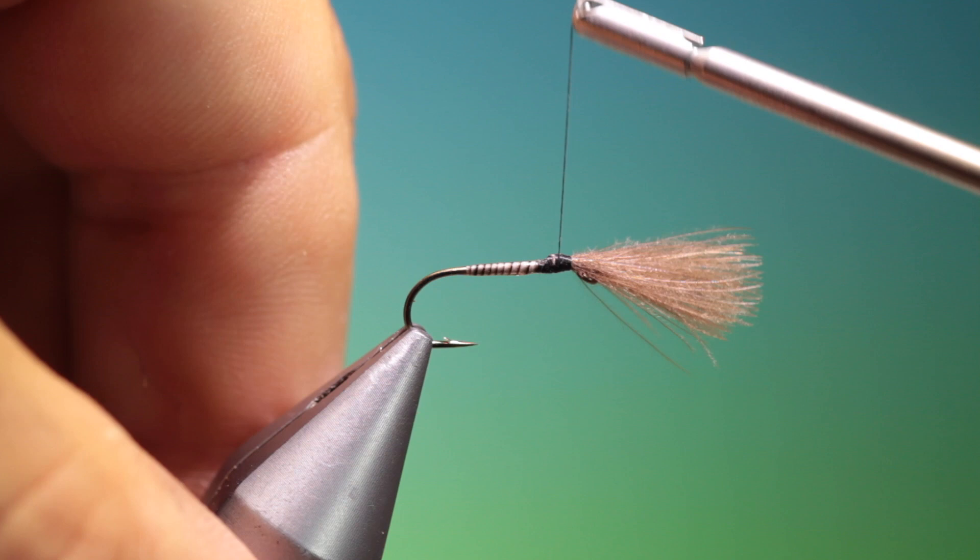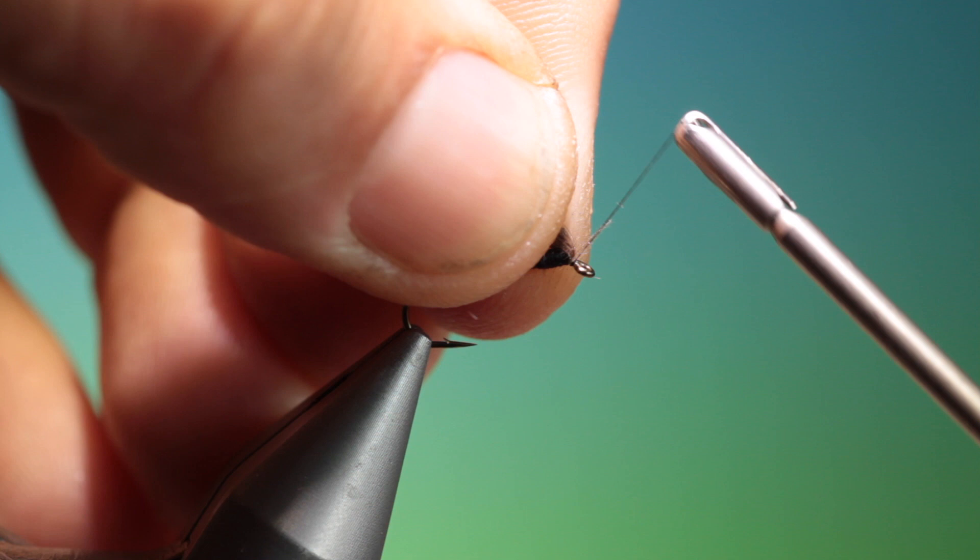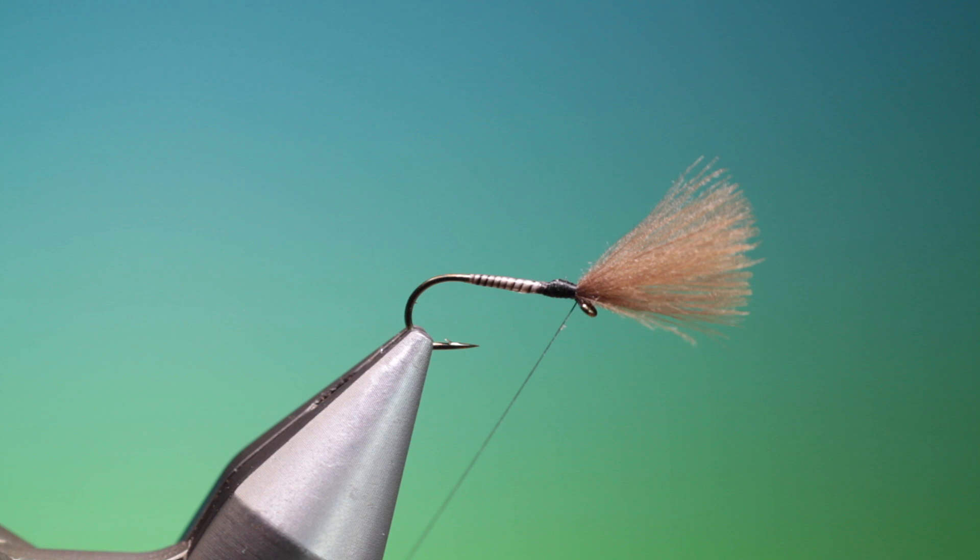And we go back up to the hook eye and lift them. Now you need three or four of these because these really need to make the fly, as I said, fish vertically. We go back to here.